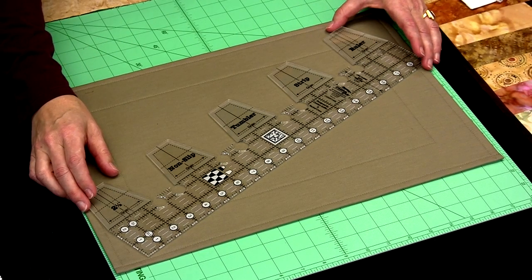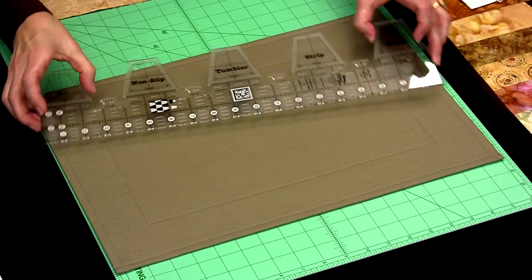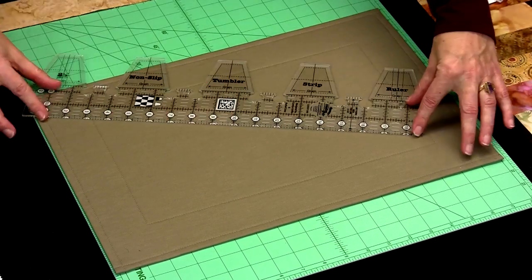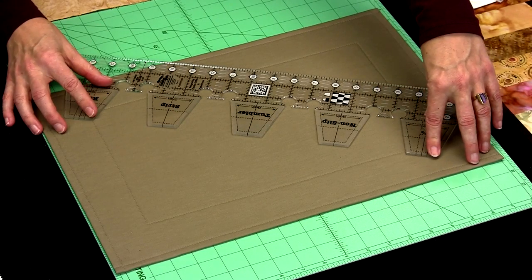Also with Creative Grid rulers, we have the turn around feature. One side of the ruler can be used to cut 2½ inch strips here, and then when you turn the ruler around, you use it to cut your actual shape.